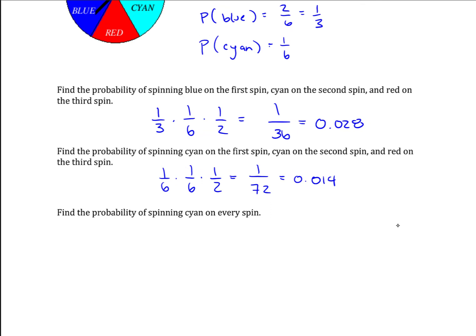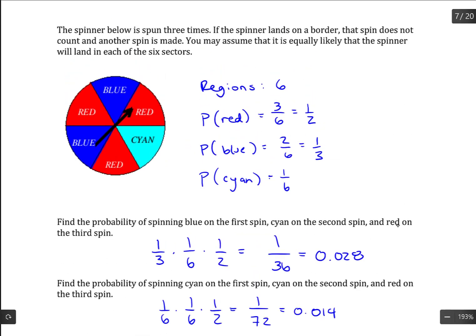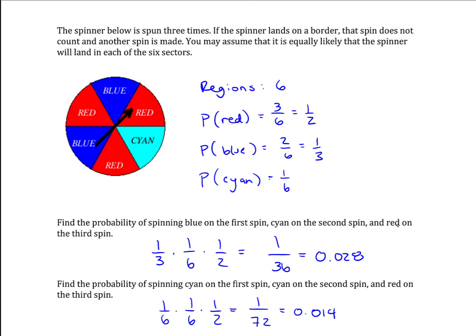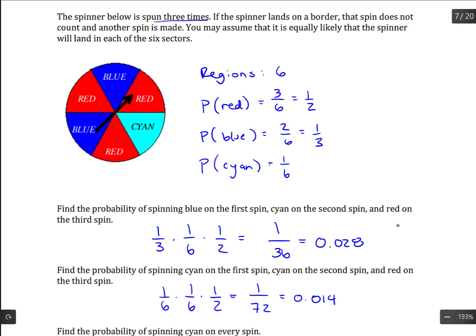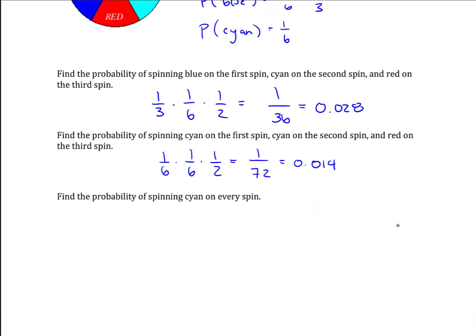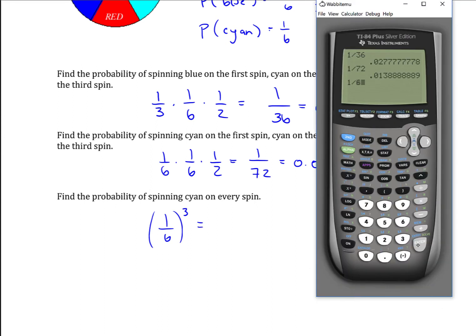Find the probability of spinning cyan on every spin. So again, we are spinning three times. That was a constant throughout the problem. So if we want cyan on every spin, we can either do one sixth times one sixth times one sixth, or we can take one sixth and raise it to the third power. So one sixth raised to the third power is 0.005.